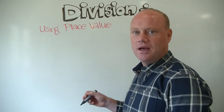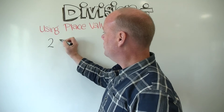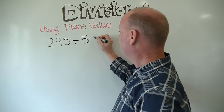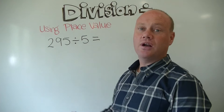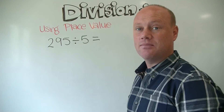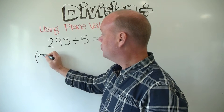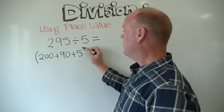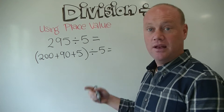Let's start with a larger division problem: 295 divided by 5. How I'm going to solve this is by pulling 295 apart into its place values. So 295 is the same as 200 plus 90 plus 5, and I'm going to divide each of those different parts by 5.